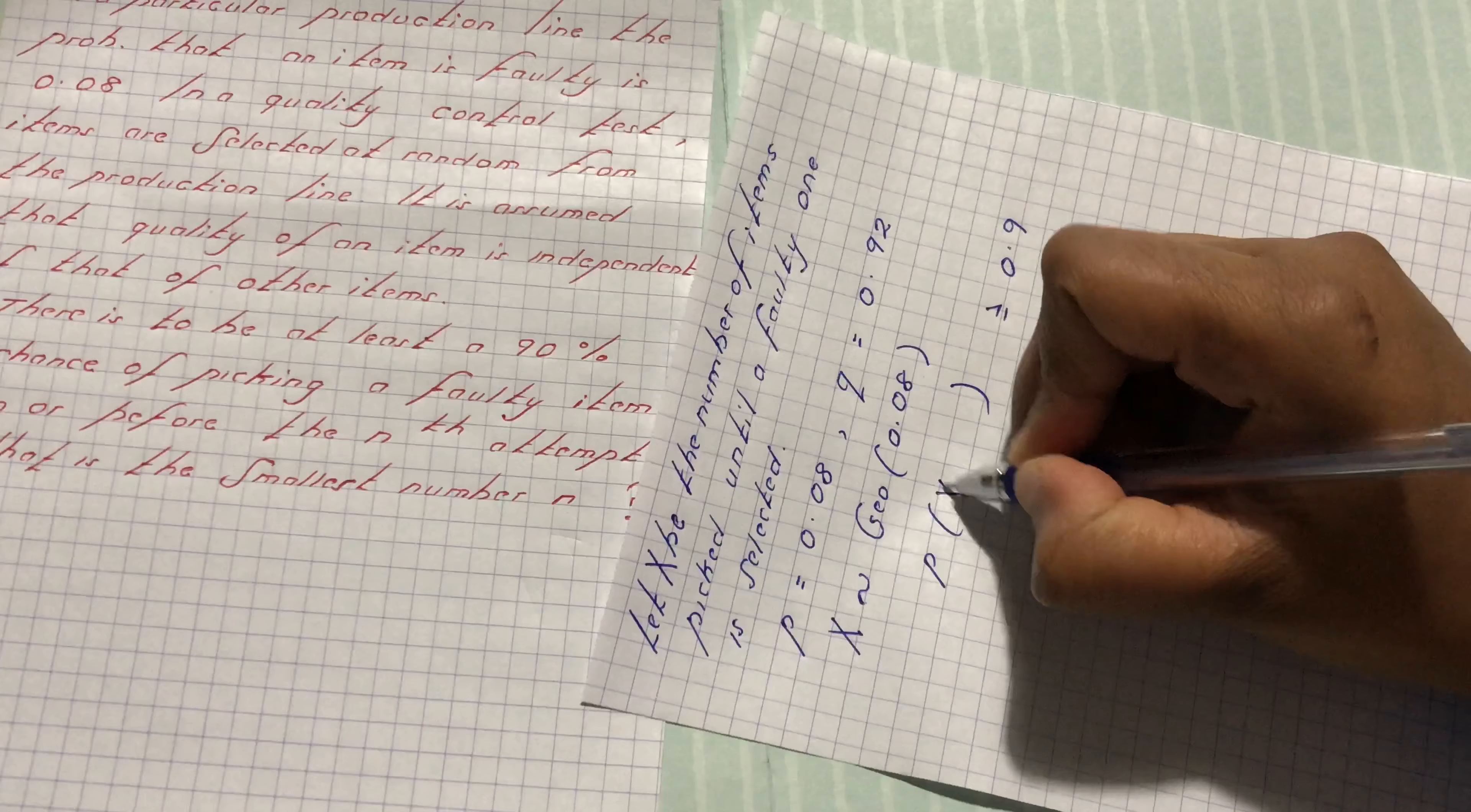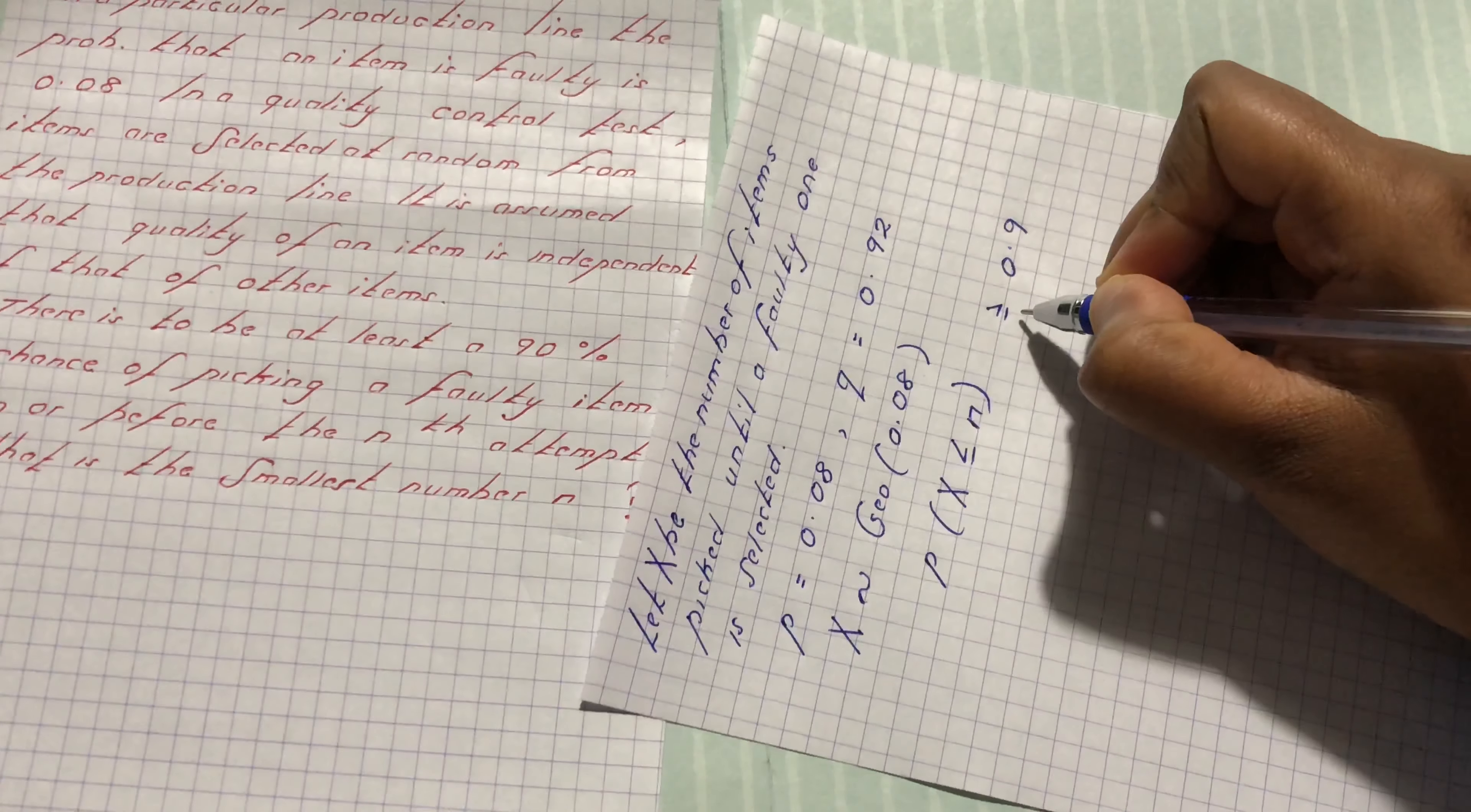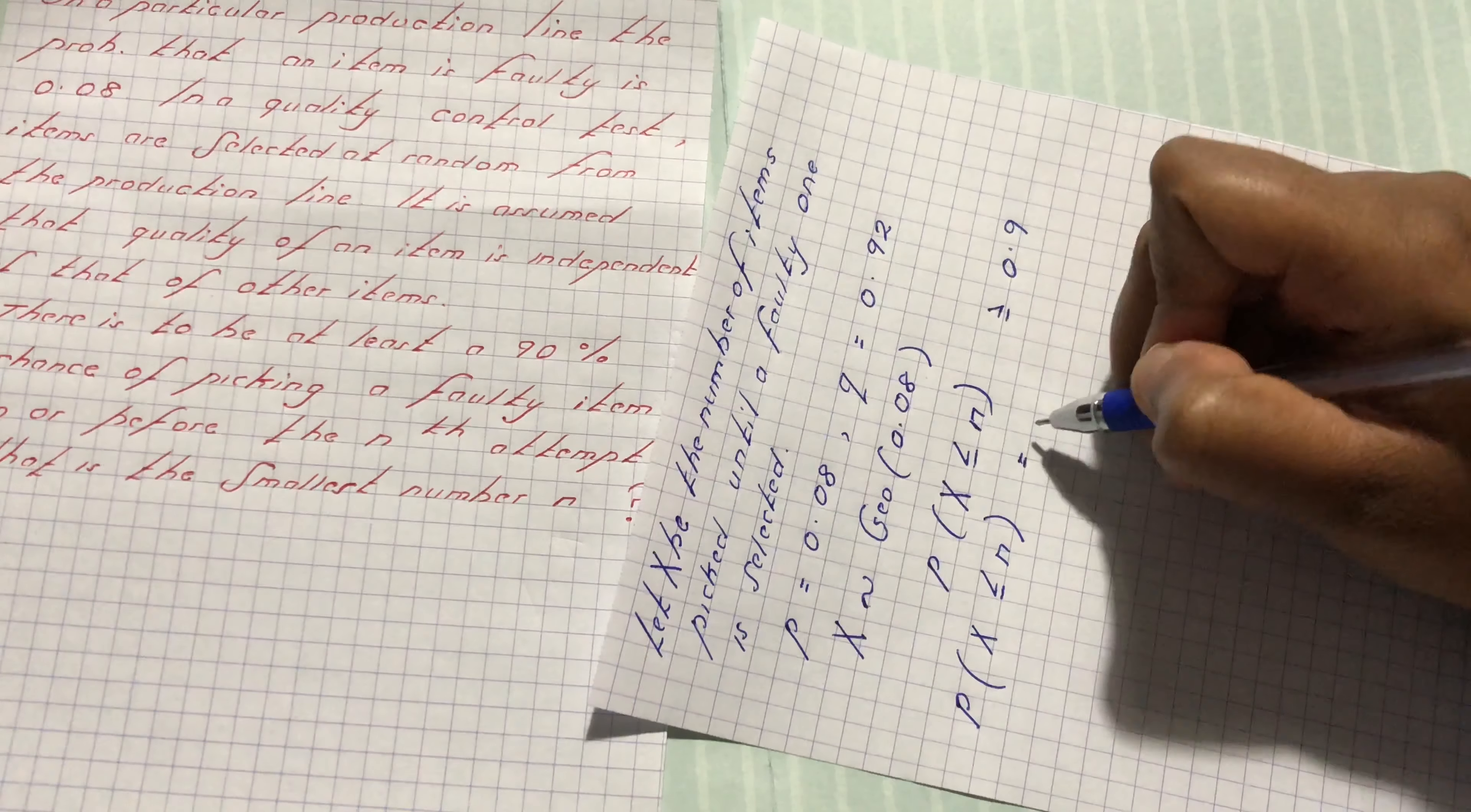So x is what? On n or less than n. So probability of x less or equal to n should be greater or equal to 0.9. But we know that the probability of x less or equal to n is what? From the results we have seen previously is what?